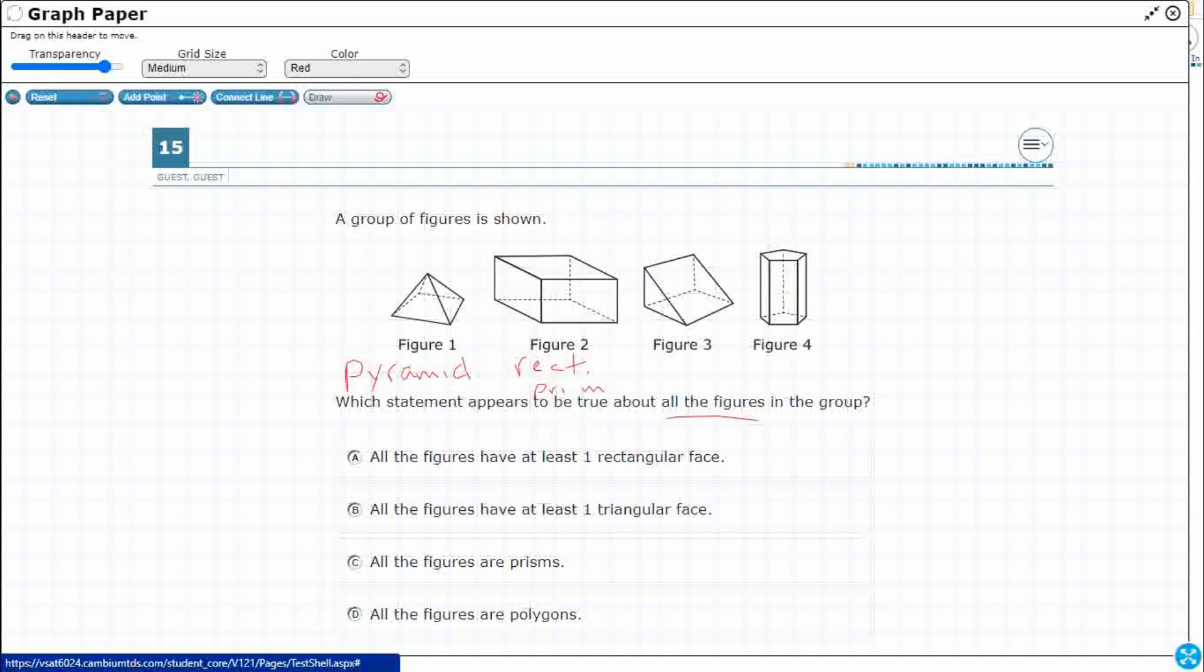Figure 2 is a rectangular prism. And then, figure 3, look at that. You've got two triangle bases kind of stretched out. This is a triangular prism.